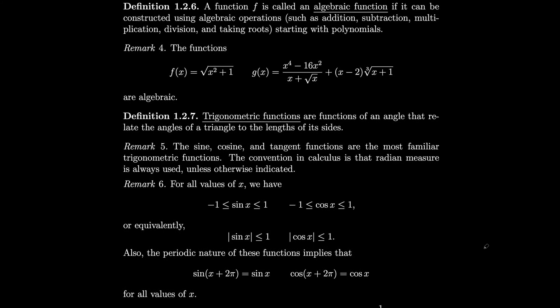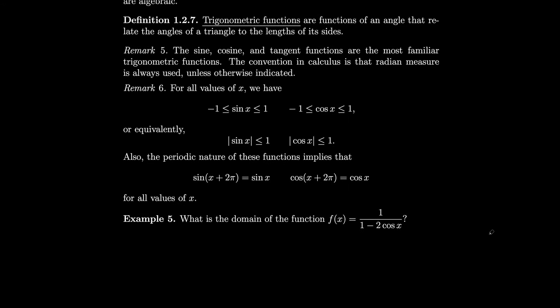Next we have trigonometric functions — functions of an angle that relate the angles of a triangle to the lengths of its sides. Sine, cosine, and tangent are the most familiar. Our convention for calculus is that radian measure will always be used unless we specifically say degrees. You should recall that for all values of x, sine of x and cosine of x are between negative 1 and 1. You should also remember that these functions are periodic — sine of x equals sine of x plus 2π, and similarly for cosine.